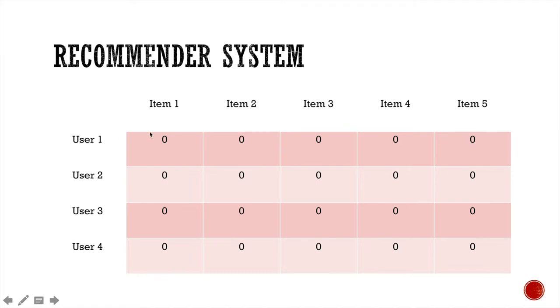And as the user interacts with an item, that is, if the user clicks on the item or views the item on the web page, it records one in this entry. And so on and so forth for the others.